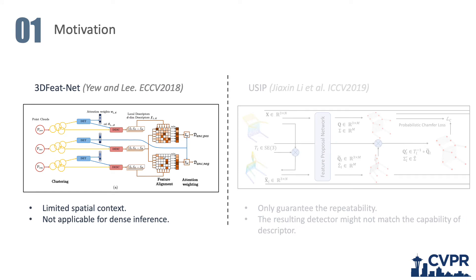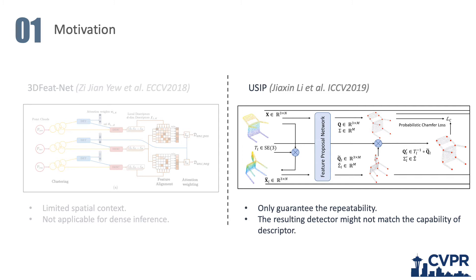Previous attempts on learning-based key point detectors such as 3D FitNet predict a patch-wise detection score, whereas only limited spatial context is considered and dense inference is not applicable in practice. Another recent work, USIP, only cares about repeatability, and without a joint learning of detection and description, the resulting detector might not match the capability of the descriptor.